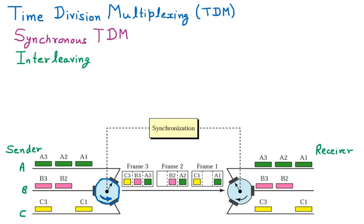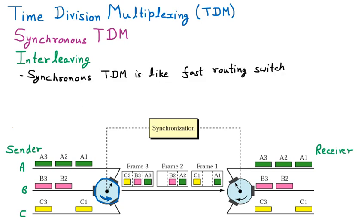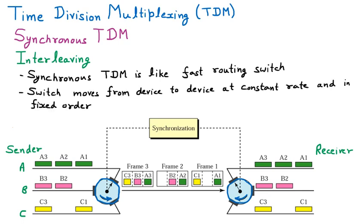These packets are sent to the specific receivers. Synchronous TDM is just like a very fast routing switch. There are two switches as we have seen in the diagram. These two switches are moving, and they move from device to device at a constant rate and in a fixed order — meaning at constant speed in a specific direction.